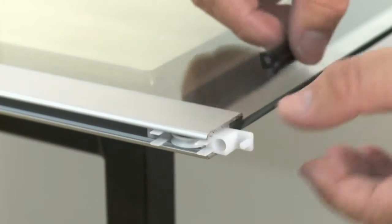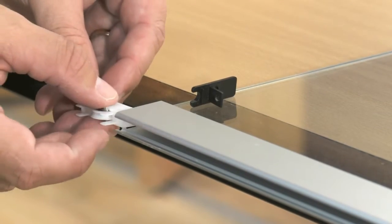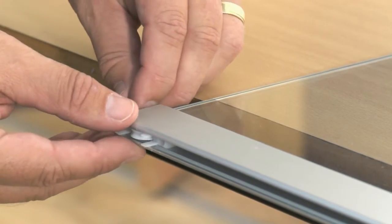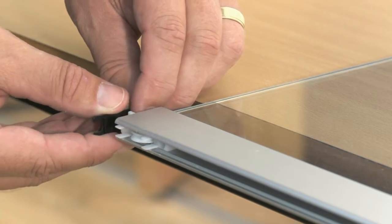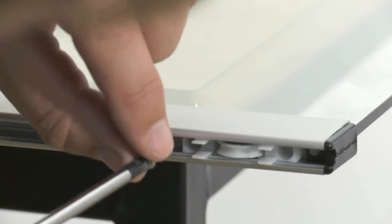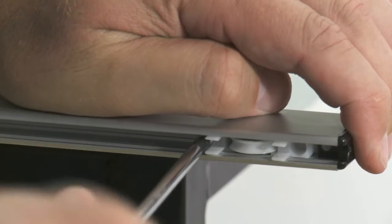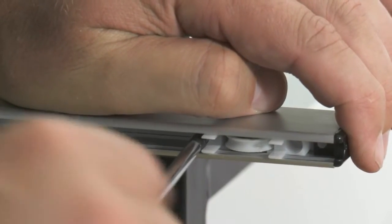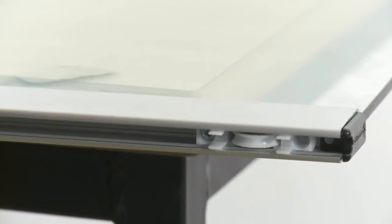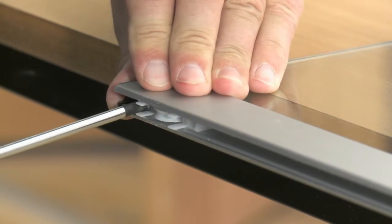Insert the bottom rollers and end caps into the glass rail. Secure them into place using the screws provided. Repeat for the other rollers.